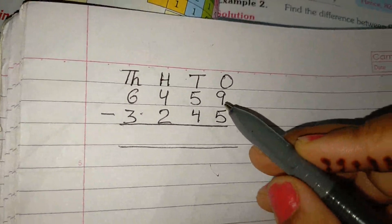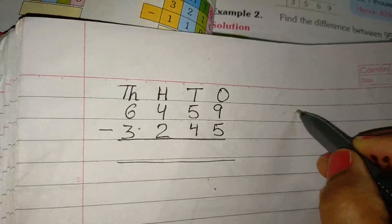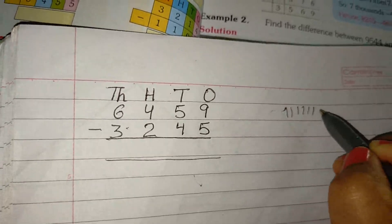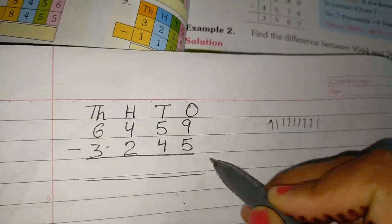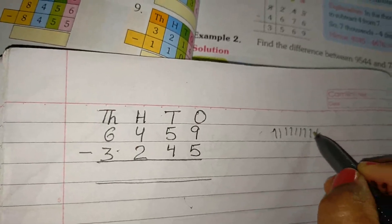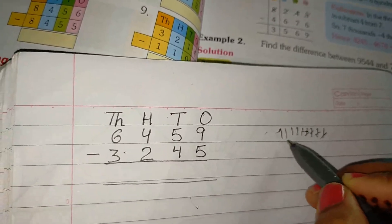If you have to subtract 5 from 9, you can solve it like this. Draw 9 lines: 1, 2, 3, 4, 5, 6, 7, 8, 9. Then cut 5 lines from here: 1, 2, 3, 4, 5. The number of sticks remaining is...